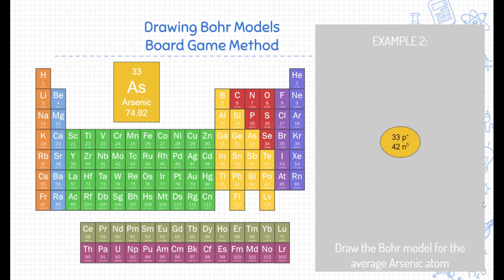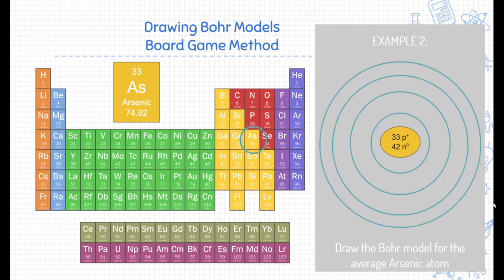The center of the nucleus has 33 protons and 42 neutrons. Remember, this is just the average isotope of arsenic. How many rings does arsenic have? Well, if you found arsenic on the periodic table, it's down here. It's on the fourth period or fourth row of the periodic table. So there are four rings of this Bohr model.